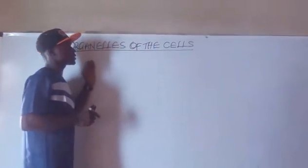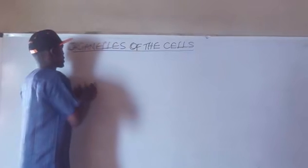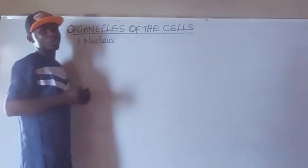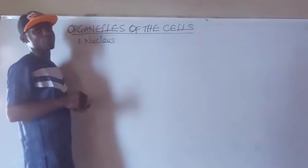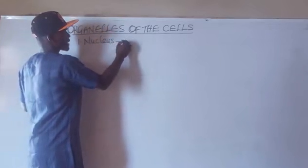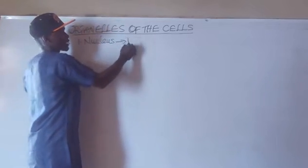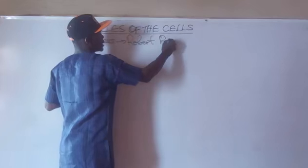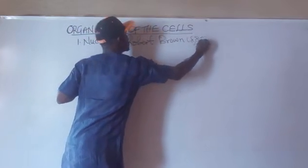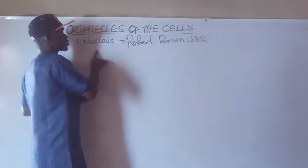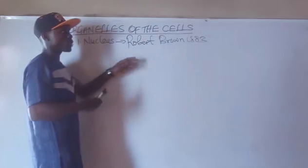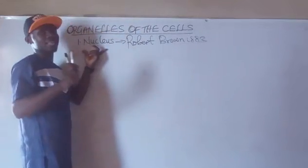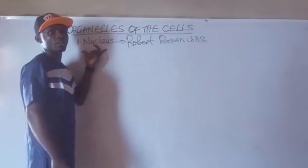So, what are the organelles of the cells? Number one, we have the Nucleus. The Nucleus is one of the organelles that make up the cell. It was first described by Robert Brown in the year 1883. The Nucleus is known as the largest organelle of the cell.